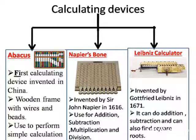In earlier times, when we were not having any computer, we used these calculating devices to perform calculations. The first device is Abacus. It was the first device invented in China. As you can see in the picture, it has a wooden frame with wires and beads, used to perform simple calculations. The second device is Napier's Bones, invented by Sir John Napier in 1616.